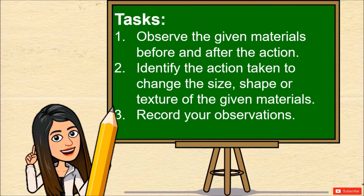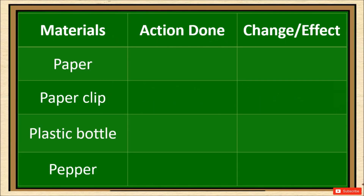Here are the steps we will follow. First, observe the given materials before and after the action. Second, identify the action taken to change the size, shape, or texture of the given materials. Third, record your observations. I will be performing the experiment, but I will be needing your help as we have to record the observations. Your table should look like this one. You may pause at this part of the video to write your copy. After which, click on play to view the experiment properly.